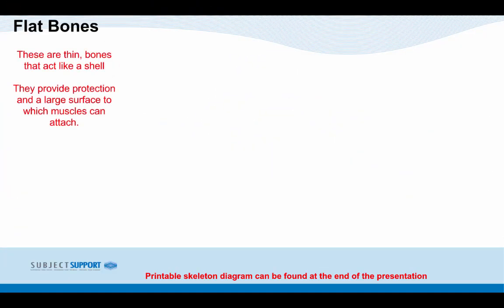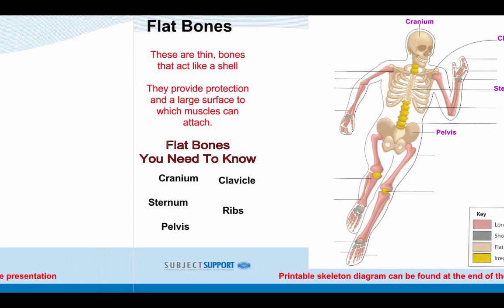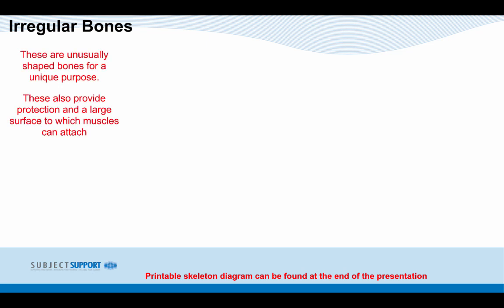Flat bones are thin bones that act like a shell. They provide protection and a large surface to which muscles can attach. Flat bones you need to know include the cranium and the clavicle.